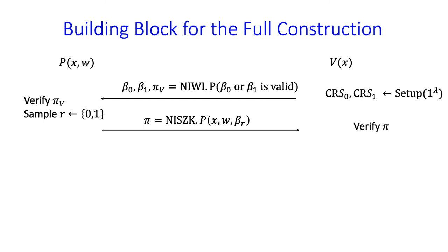That completes the simplified construction, which gets across the main ideas: use an NISZK argument and force the verifier using a NIWI to prove it's picking a good CRS. Now we'll see in more detail the full construction, which works for all NP languages. Working up to the full construction, consider a slight variant: the verifier samples two independent CRSs using the setup algorithm for the NISZK argument and sends them both over. In addition, the verifier sends a NIWI proof that at least one of them is valid. The prover, after verifying this proof, picks a random one of the two CRSs and computes an NISZK argument for the actual statement using that CRS.